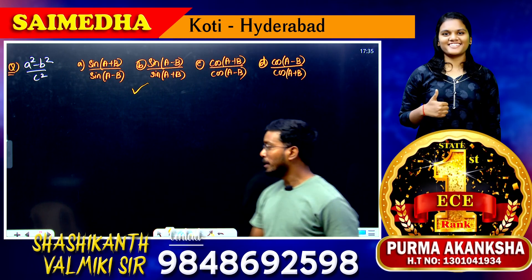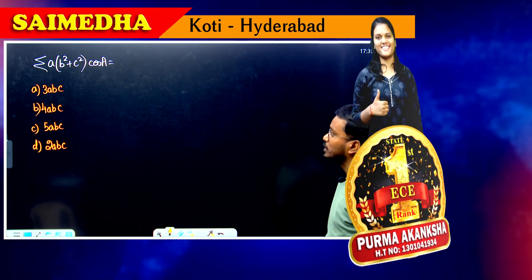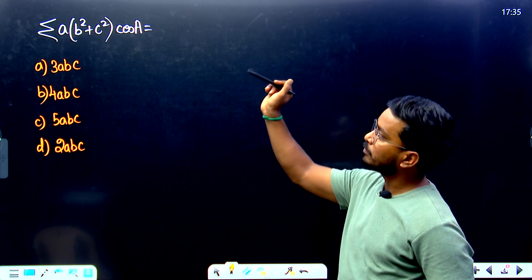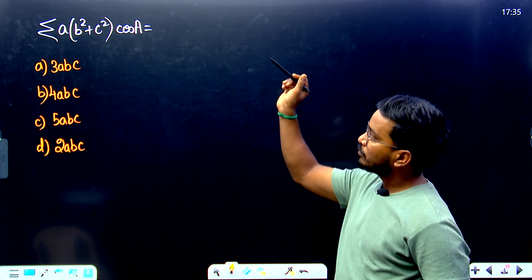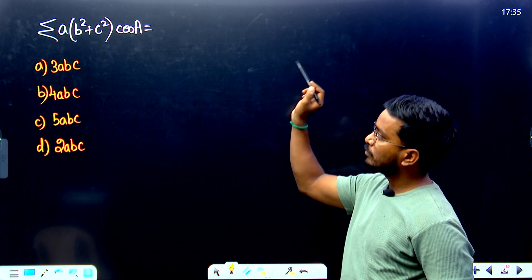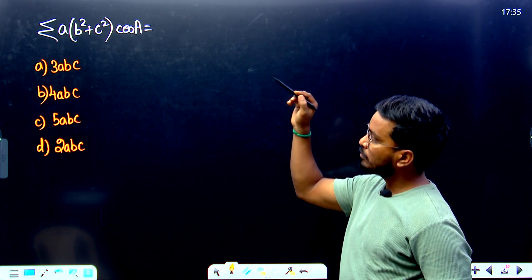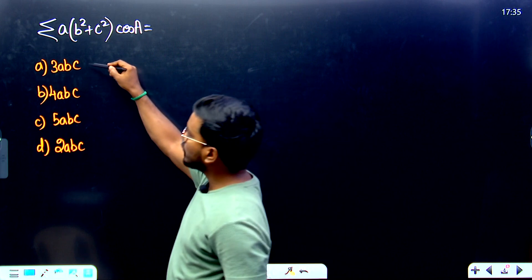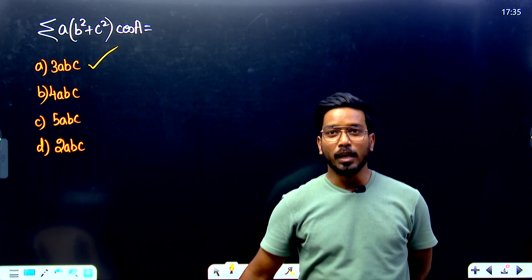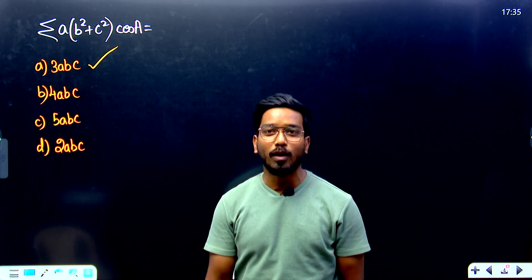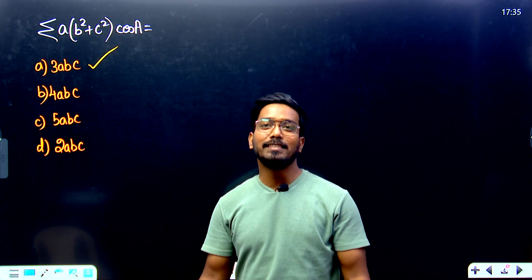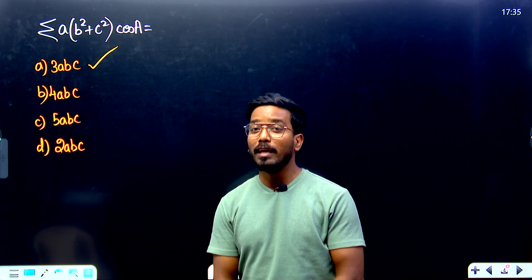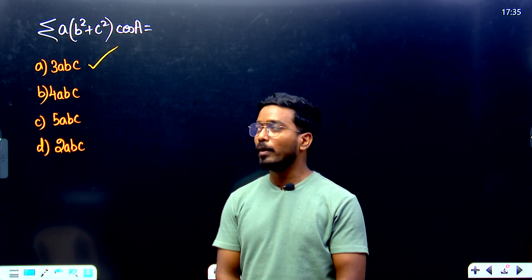Similarly, the second question involves sigma into a into (b² + c²) cos A. The correct answer for this question is option number A. If you are also able to solve this question in this method, yes — you are going to be in the top 10 rankers in the ESET examination.